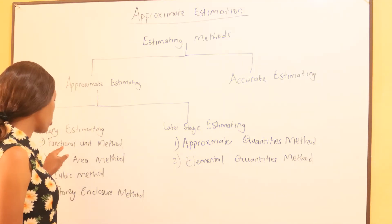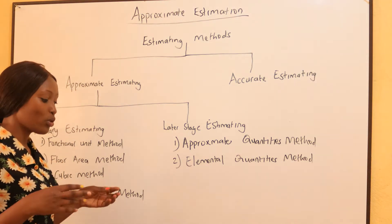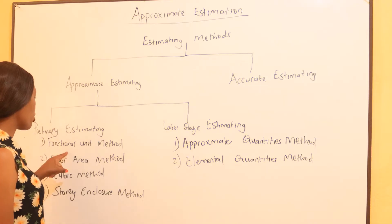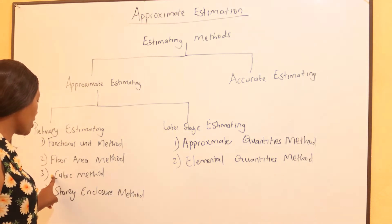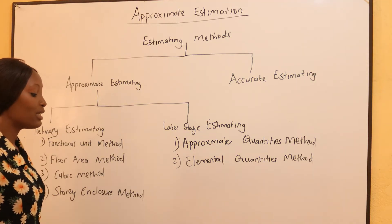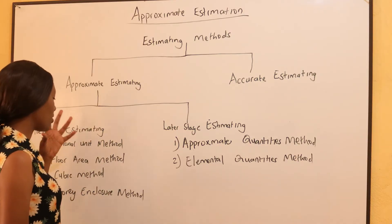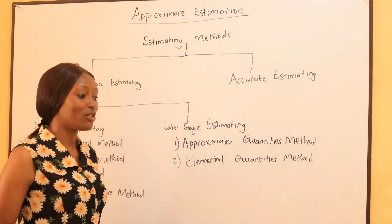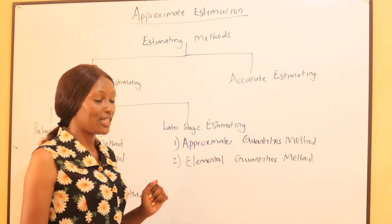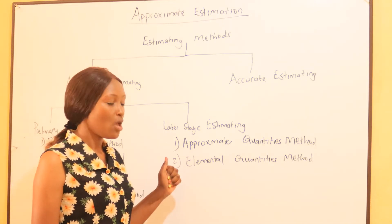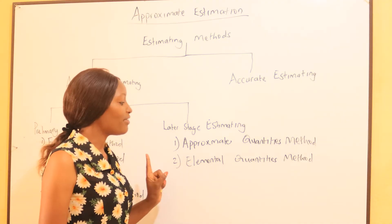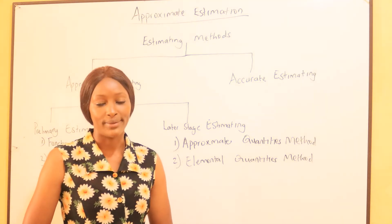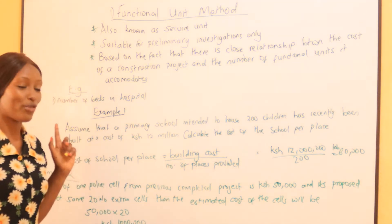For preliminary estimating we have four methods: the functional units method, the floor area method, the cubic method, and the story enclosure method. This is very commonly examined — you may be asked to explain the approximate estimating methods or given an example to calculate. For late stage estimating we have two methods: the approximate quantities method and the elemental quantities method. We are now going to look at each one in full detail with examples.